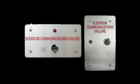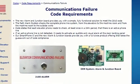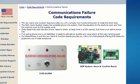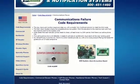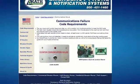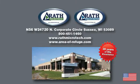Rath has available both the 2100 alarm and an OEM mount version that can be mounted behind your hall panel. They can be found at the Rath website under code requirements, and includes installation instructions on how to install and wire them up. If you still have questions, please feel free to contact Rath at 1-800-451-1460.